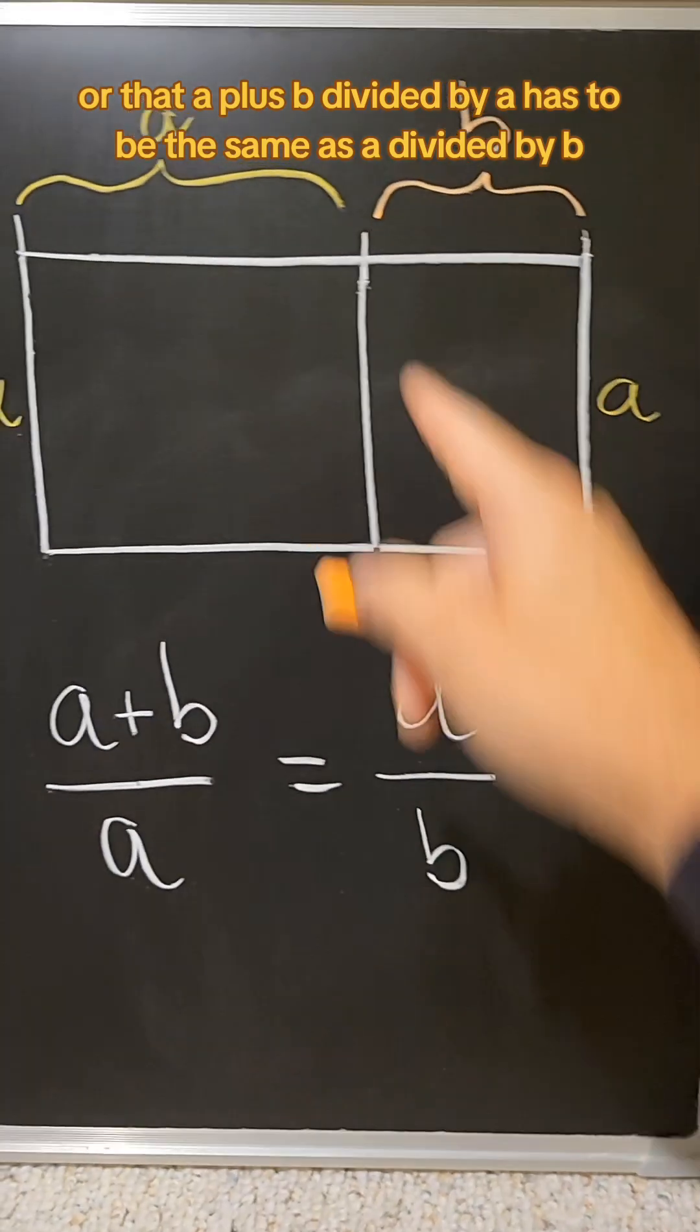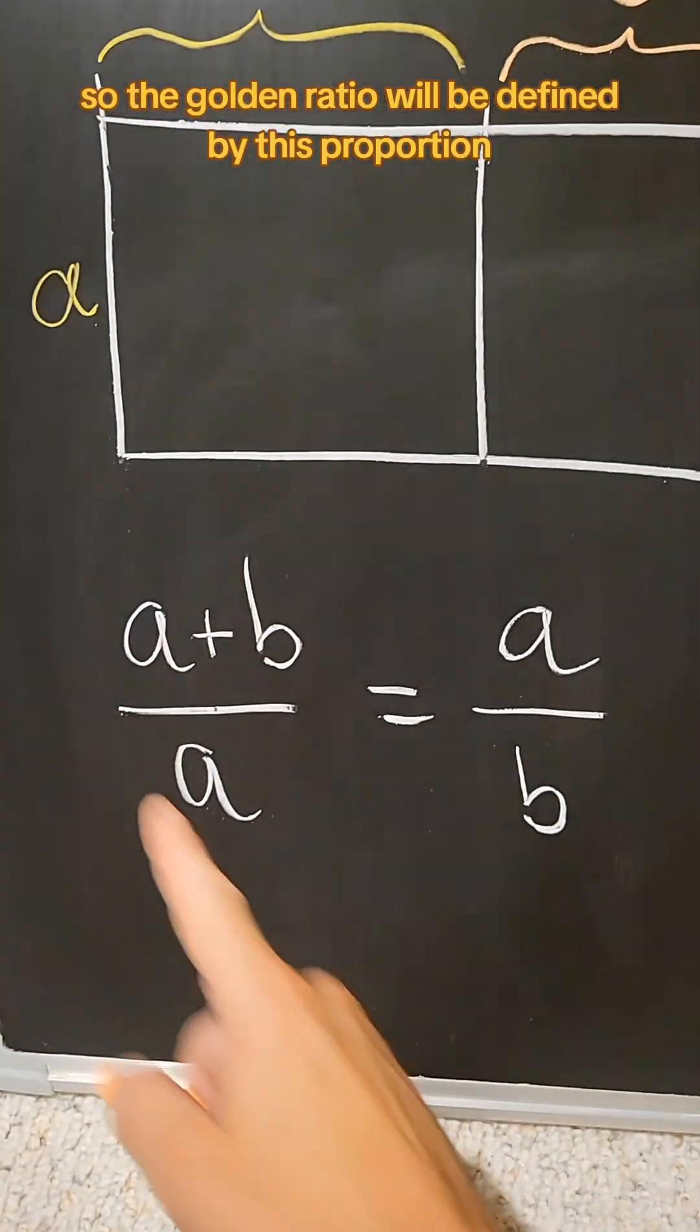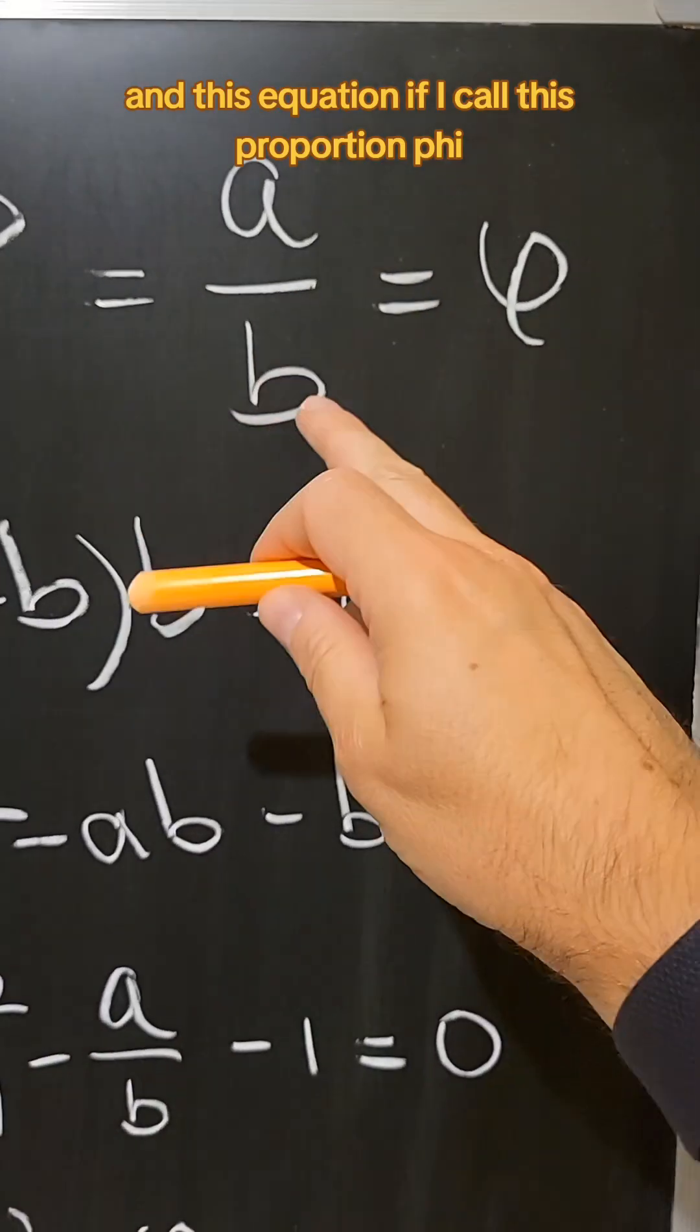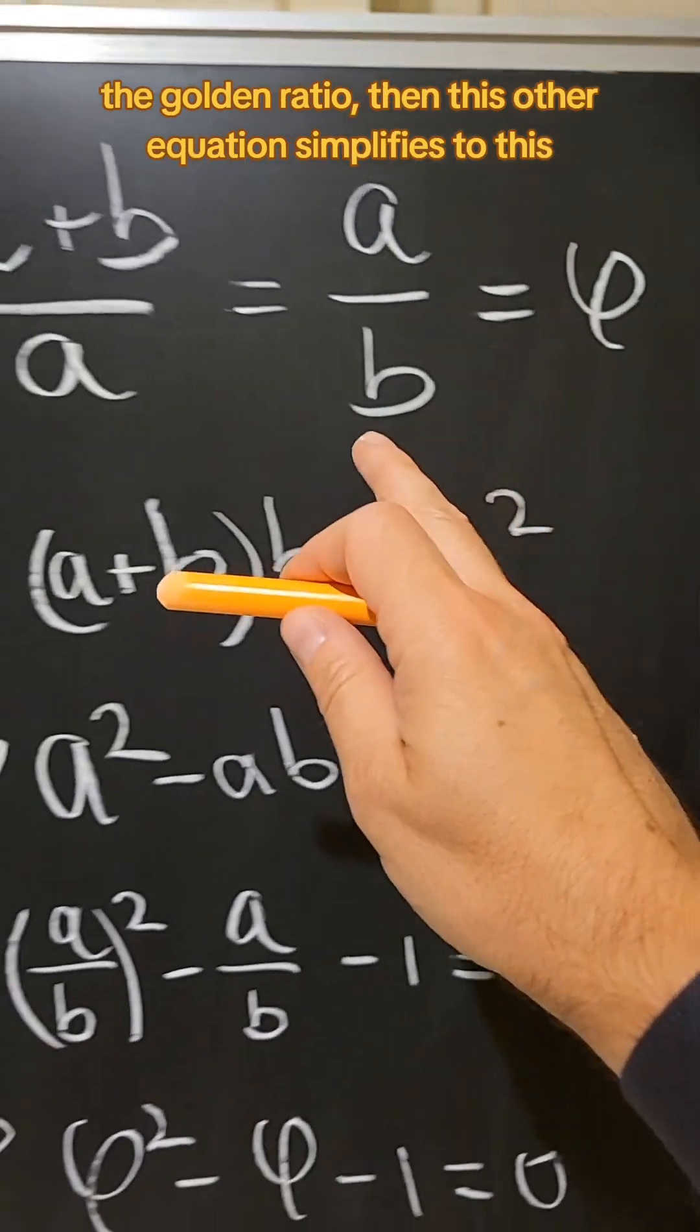So the golden ratio will be defined by this proportion and this equation. If I call this proportion phi, the golden ratio,